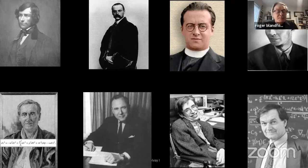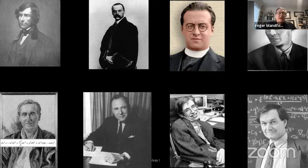This is John Michell, an English polymath in the 18th century, who asked the question: what happens if we made the sun so small that light would not have the escape velocity from its surface? He asked that question; Laplace did a little bit later, and in some sense he was the first person to put on the table the notion that there might be black holes out there.